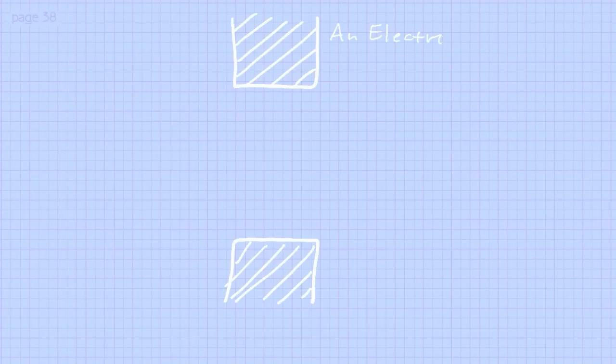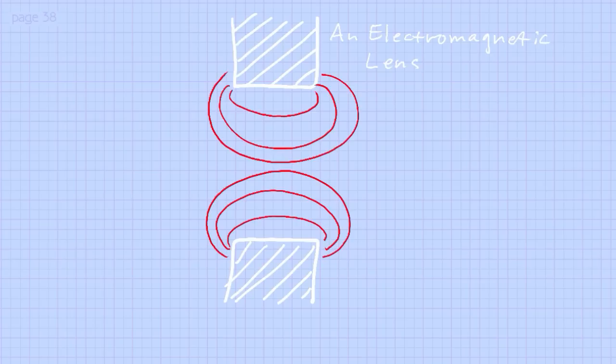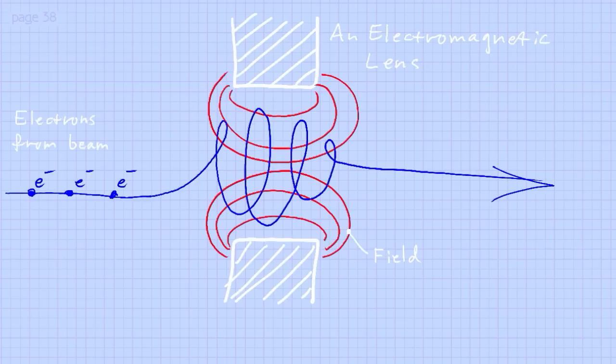Basically it works exactly like your eye, which can change the focusing effect by adjusting the curvature of the lens. One drawback with electromagnetic lenses is that when the electrons are focused by the lens, they make a spiral pathway as they go through the lens. That will cause the image produced on a screen below to behave differently.